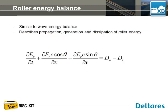Apart from the wave action balance, the wave module also solves the roller energy balance, which as you can see from the equation is quite similar to the wave action balance. The roller energy balance describes the propagation, generation, and dissipation of roller energy. There's a change of roller energy over time dE/dt, propagation of energy in the X and Y directions, and as a source term the dissipation of waves, while the dissipation of roller energy dr acts as a sink term.